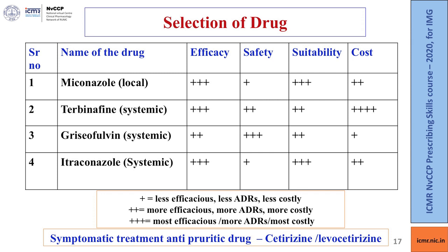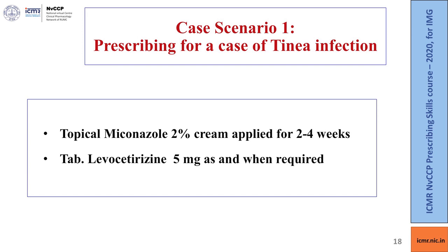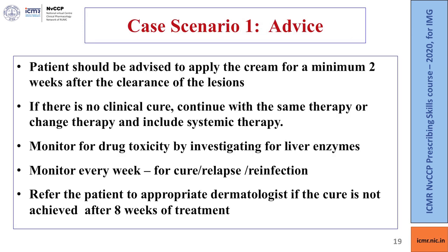The drugs most suitable are miconazole and itraconazole. Griseofulvin has more adverse effects compared to others, and terbinafine is costly. Along with the antifungal drug, an antipruritic drug like cetirizine or levocetirizine can be prescribed. The final prescription for tinea corporis is topical miconazole 2% cream applied for 2–4 weeks, along with tablet levocetirizine 5 mg as and when required, because itching significantly decreases quality of life.